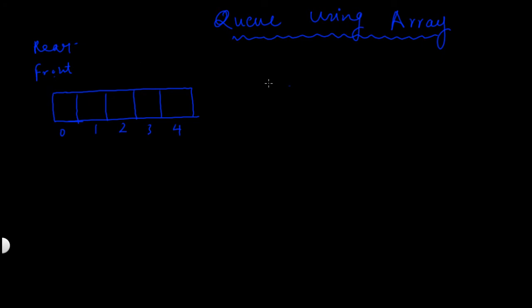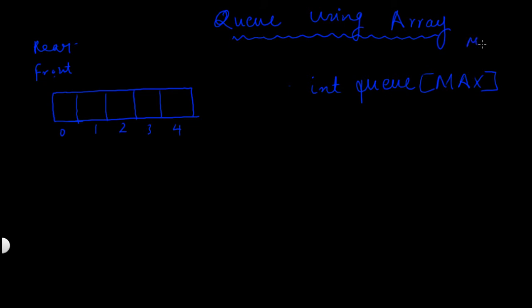A queue can be implemented by using an array or a linked list, and this tutorial is about implementing a queue using an array. When you implement a queue using an array, first you need to declare an array. Here I have declared an array whose name is queue, and suppose the size of this array is 5 — the value of max is 5, so the size of this array becomes 5.